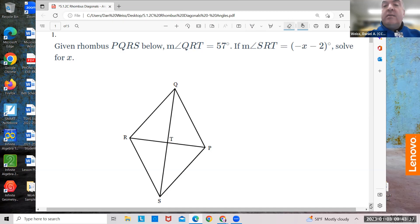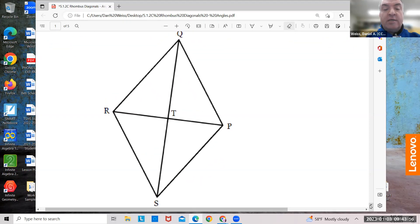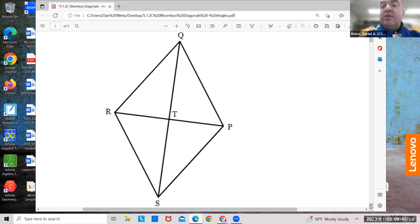Now, in this problem, it says angle QRT is 57 degrees. So, first of all, what's angle QRT? Angle QRT, you start at Q, you go to R, then you go to T. There's QRT, meaning this angle here is 57 degrees.